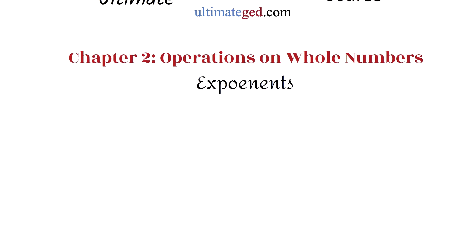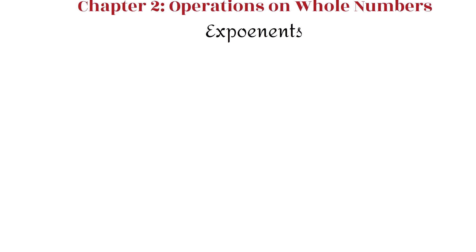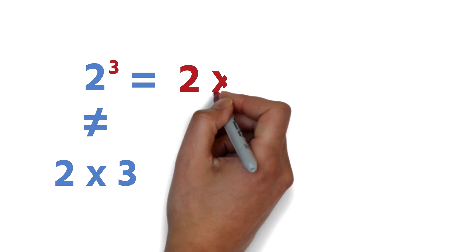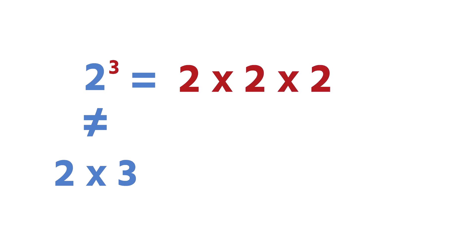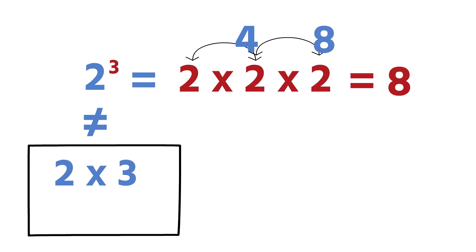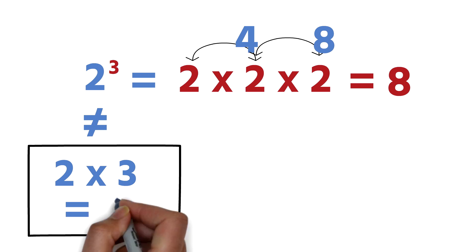Before we even look at our question, I want us to solve this problem permanently. An exponent shows the number of times a number multiplies itself. 2 exponent 3 is not the same as 2 times 3. 2 exponent 3 means 2 multiplying itself 3 times — that is 2 times 2 times 2, which is 4 times 2, which is 8. This is not the same as 2 times 3, which is simply 6.